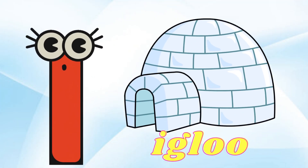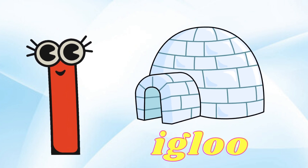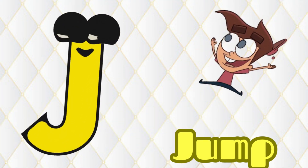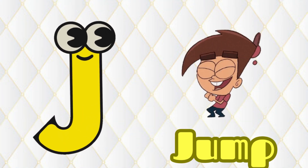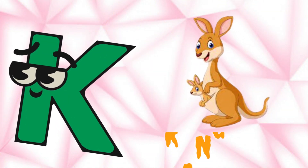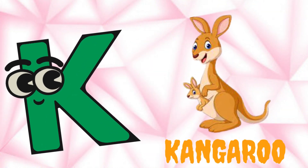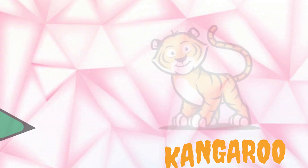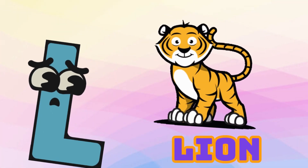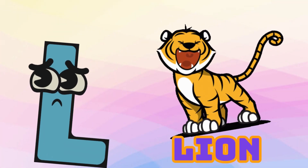I is for Igloo, I-I-Igloo. J is for Jump, J-J-Jump. K is for Kangaroo, K-K-Kangaroo. L is for Lion, L-L-Lion.